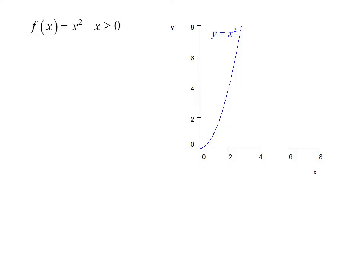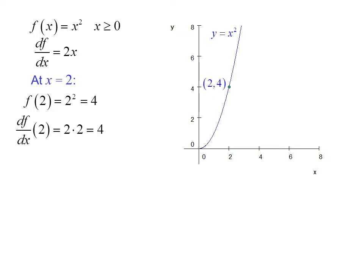Consider the function f of x equals x squared, where x is greater than or equal to zero. The derivative df/dx equals 2x, and at x equals 2, f of 2 equals 2 squared, or 4, and df/dx at 2 is 2 times 2, which is also 4. So the slope is 4, and we can draw the tangent.